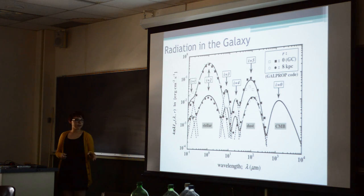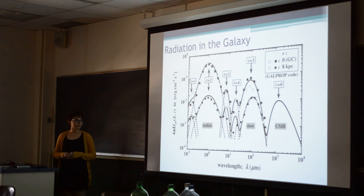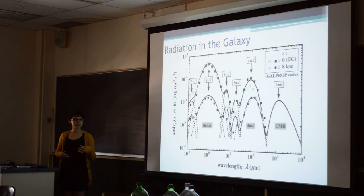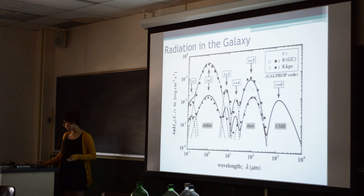There are mainly three types of radiation that we see in and around the galaxy. The first is starlight, which is kind of obvious. Then we see dust emissions, which is essentially just absorbed and re-emitted starlight. And finally we have the cosmic microwave background. I'll be focusing on that dust portion of this spectrum today.